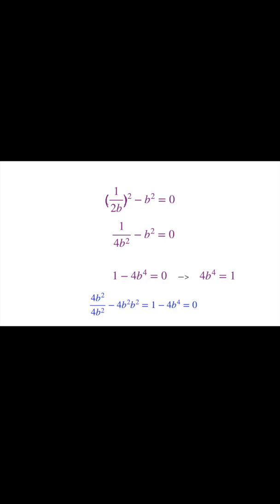On the left, we end up with 1 minus 4b to the fourth. So 1 minus 4b to the fourth is 0, which means 4b to the fourth has to be equal to 1.